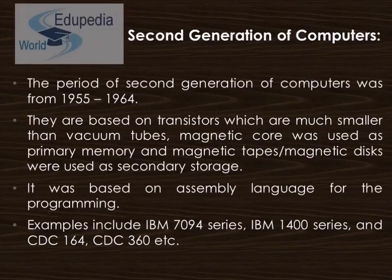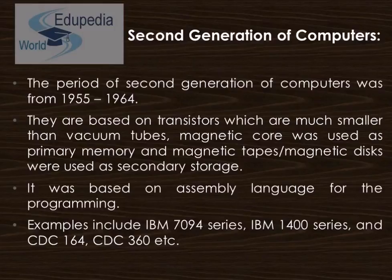Now comes the second generation of computers. That era starts from 1955 to 1964. They were based on transistors, which were much smaller than vacuum tubes. Magnetic core was used as the primary memory, and magnetic tapes or magnetic disks were used as secondary storage. It was based on assembly language for programming.